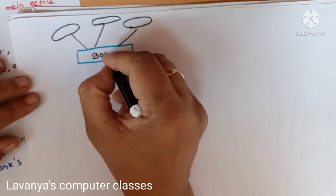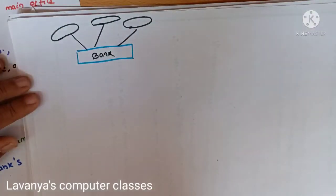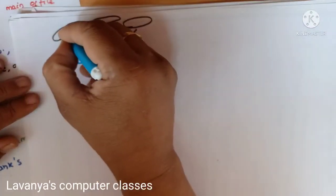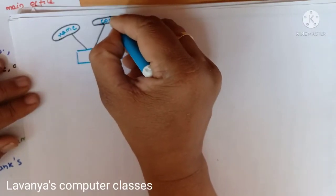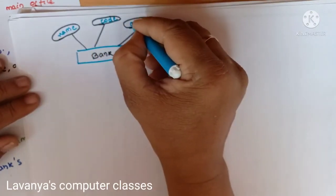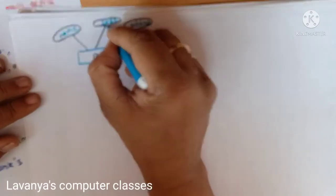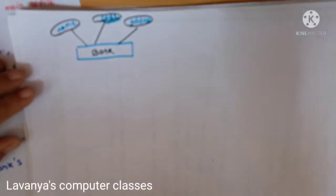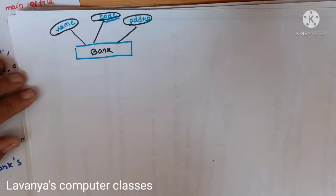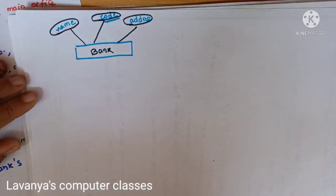This is the bank entity set with its attributes: bank name, bank code, and address. Code is the primary key attribute — through bank code we can identify the bank. So bank code is underlined. This is the first entity set.